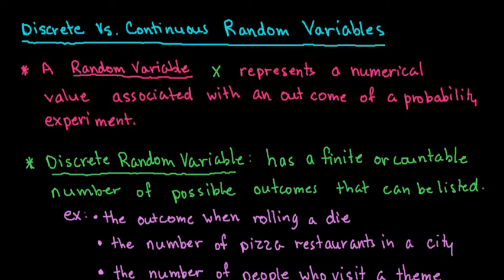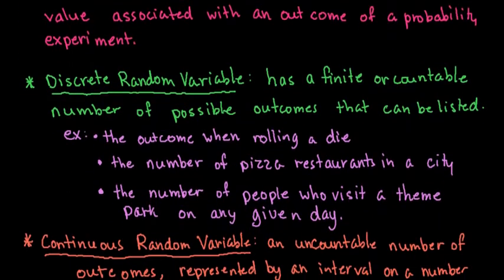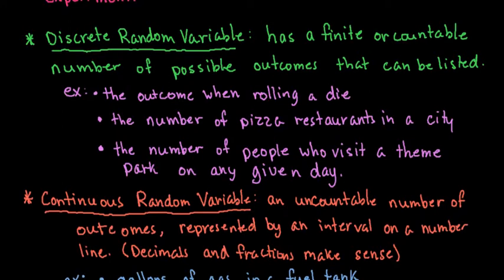There are two types of random variables that are typically used in statistics. The first one is a discrete random variable. A discrete random variable is anything that is finite or countable. If you use counting numbers to represent this, then it would be considered a discrete random variable.